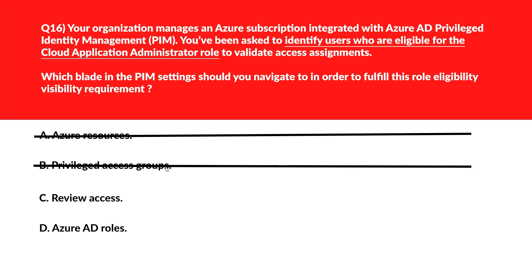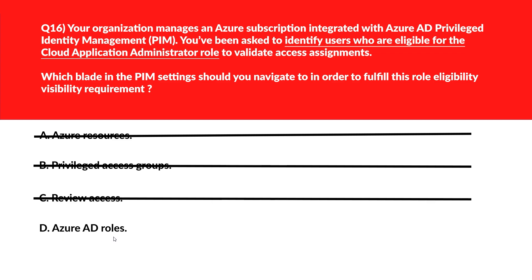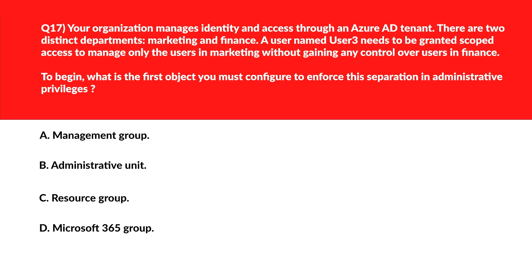Option C says review access — the Access Review blade is used to initiate and manage access reviews, not to view current eligible role assignments. Option D says Azure AD Roles — the Azure AD Roles blade displays all directory roles and their eligible users, including Cloud Application Administrator. Option D is the right answer.